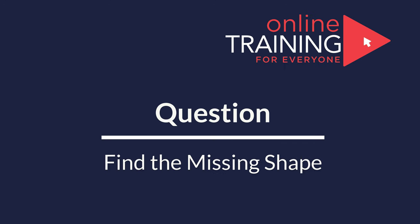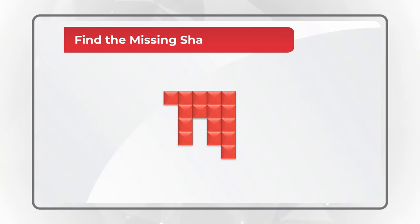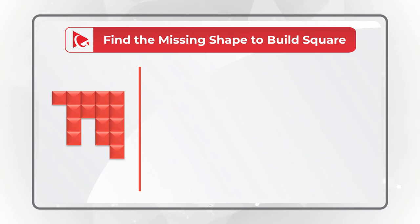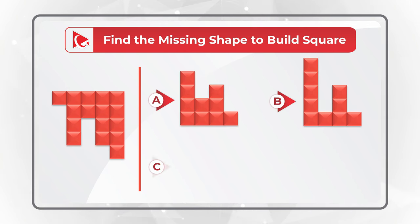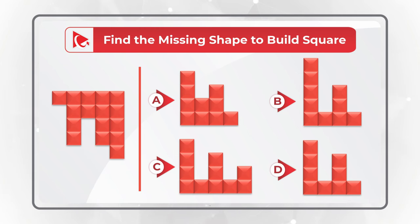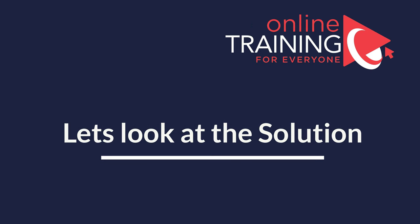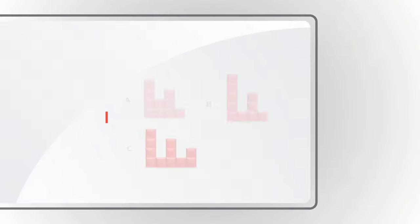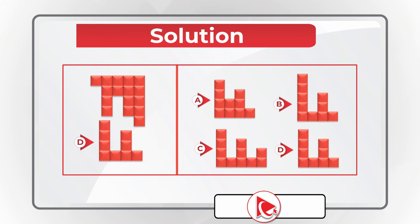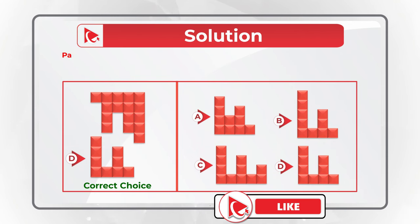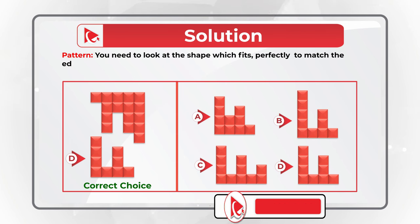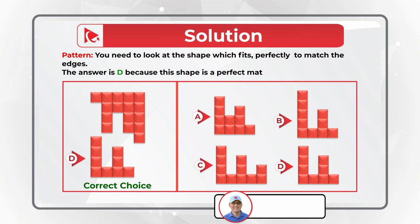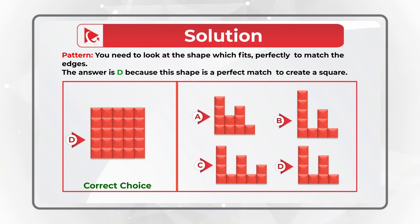Here's an interesting spatial reasoning question. You are presented with a partial square and you need to find the missing shape to complete the full square. You have four choices: A, B, C, and D. The correct choice is D — it matches perfectly because this is a five-by-five square, and Choice D is the perfect shape that matches all the edges to create a full square.